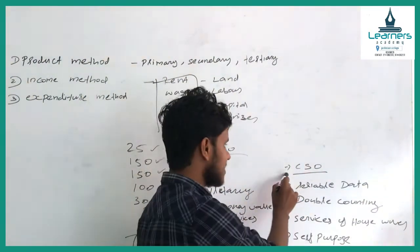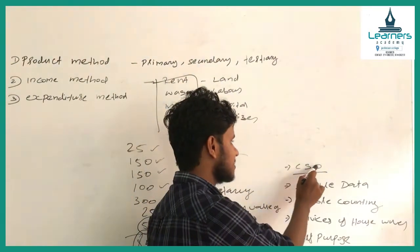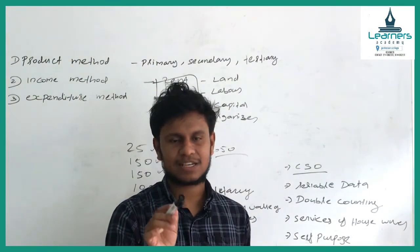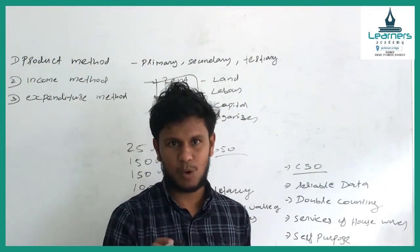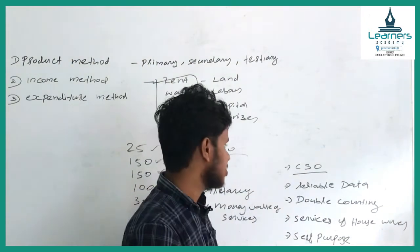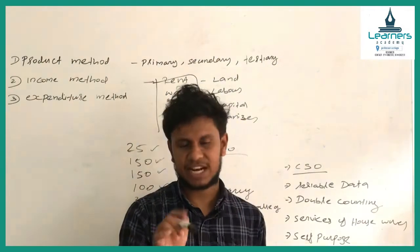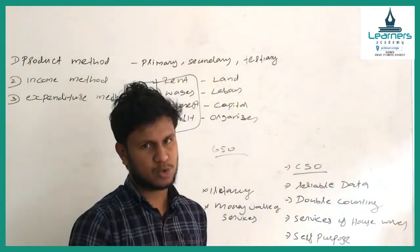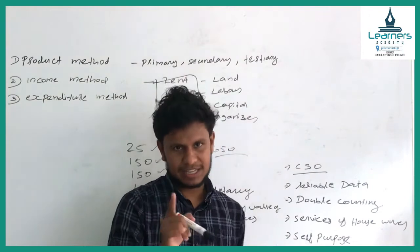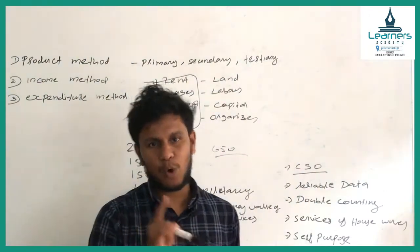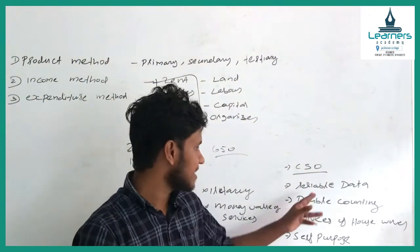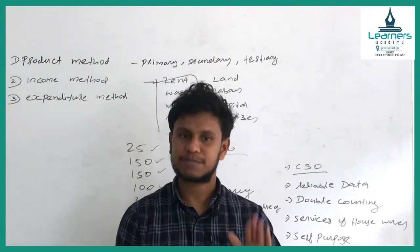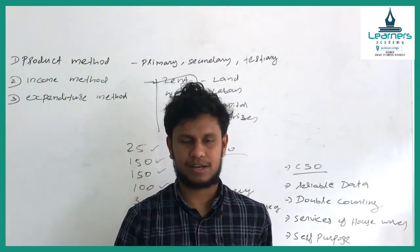CSO — Central Statistical Organization — is responsible for calculating national income. One of the major problems in calculating national income is the absence of reliable data.